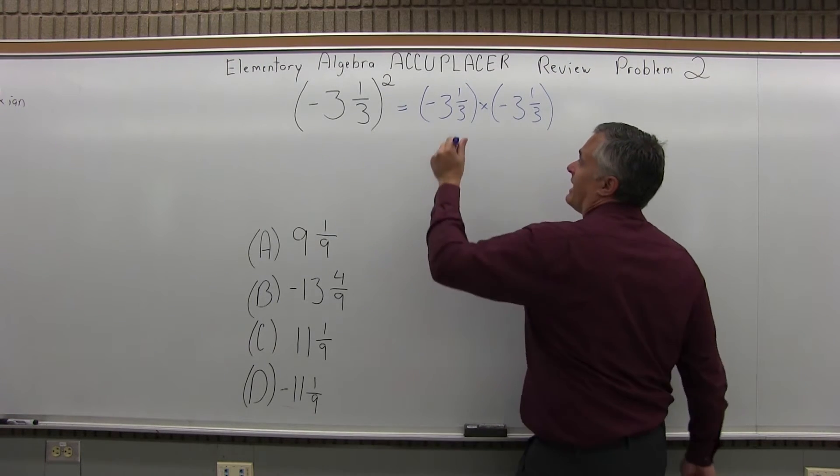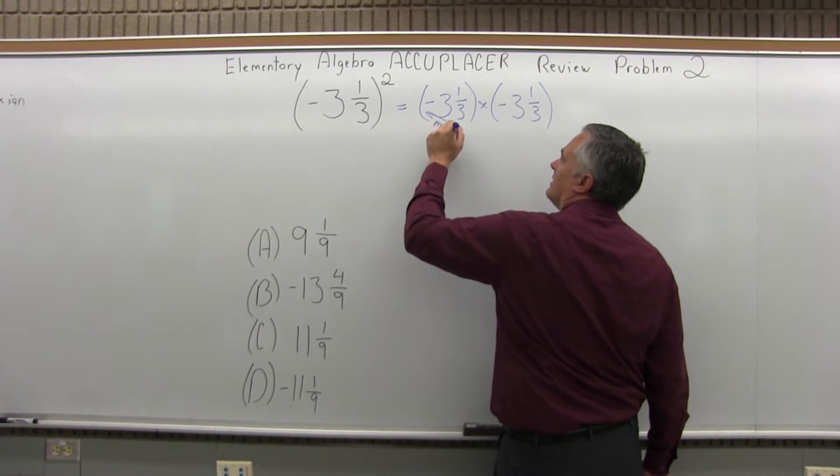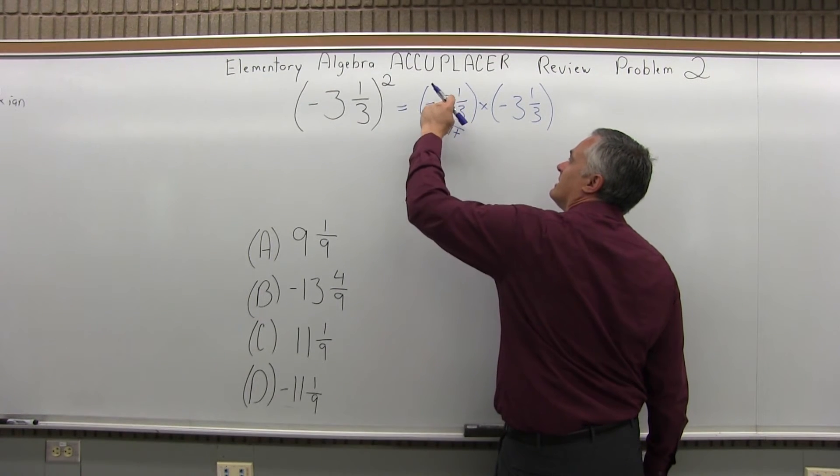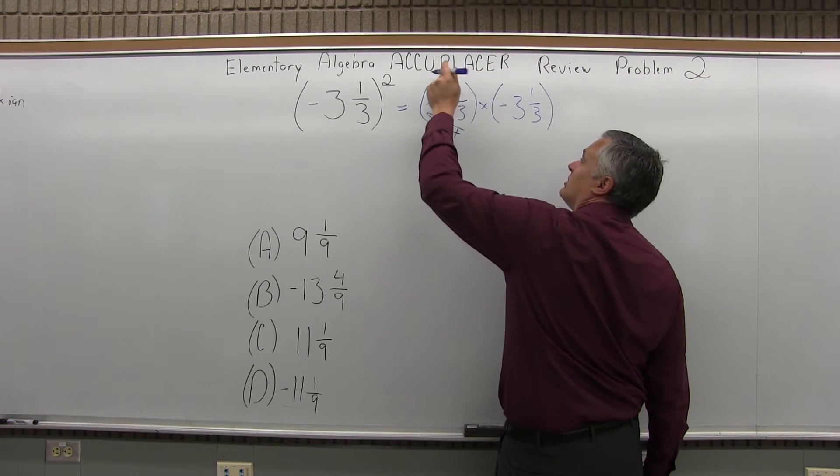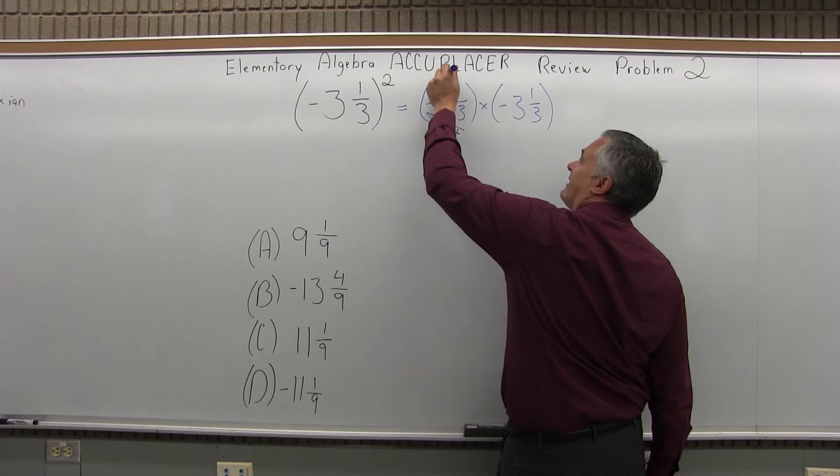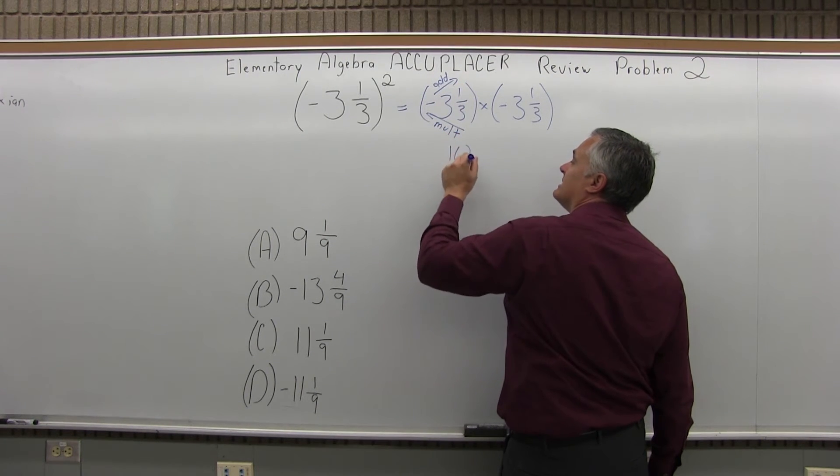So, to do that, coming up from the bottom, I multiply. So, the bottom 3 times the front 3, 3 times 3 is 9. And then, going from that 9 up to the top, I'm going to add. The 9 that I got plus 1 more is 10. So, it's 10 thirds. Don't forget, it's negative 10 thirds.